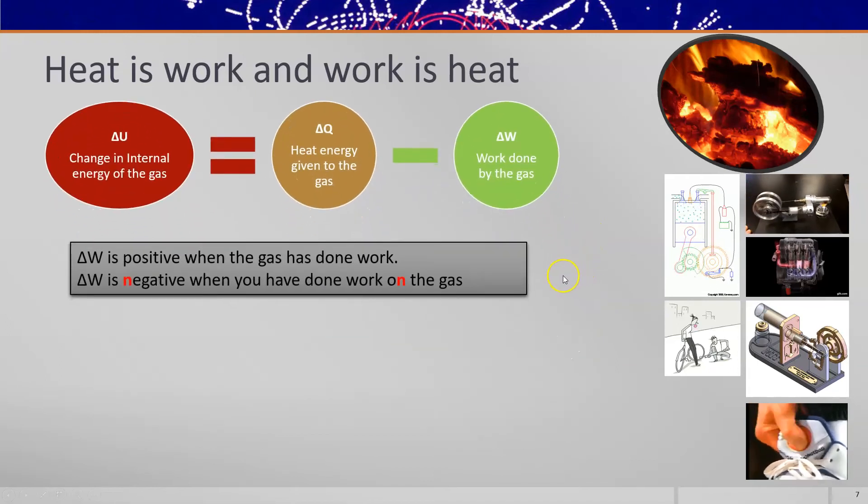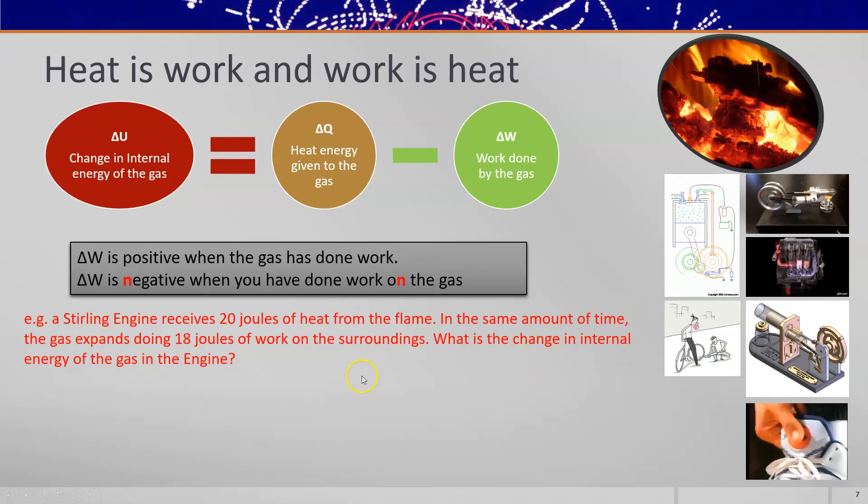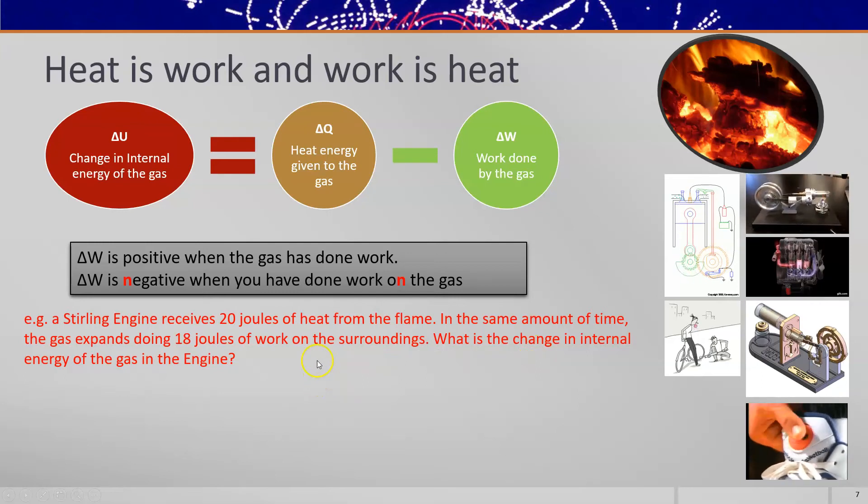Now that equation we'll use in a quick example calculation. If the Stirling engine receives 20 joules of heat from the flame, in the same amount of time the gas expands, doing 18 joules of work on the surroundings, what's the change in internal energy of gas in the engine?